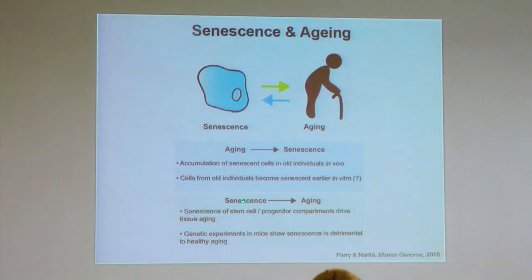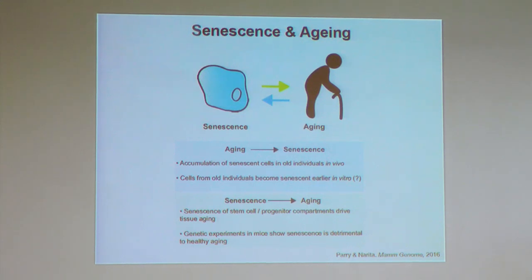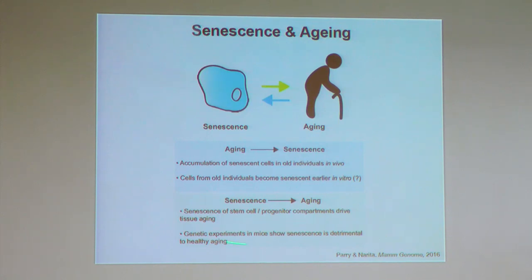More importantly, could senescence be a cause of aging? This is a really critical question. Two examples: around 2006, a bunch of papers suggested age-dependent senescence in progenitor cells could be a cause. More recently — and this is what many people are interested in — the elimination, the killing of senescent cells in vivo, extends lifespan in mice. This is a very interesting topic at the moment.